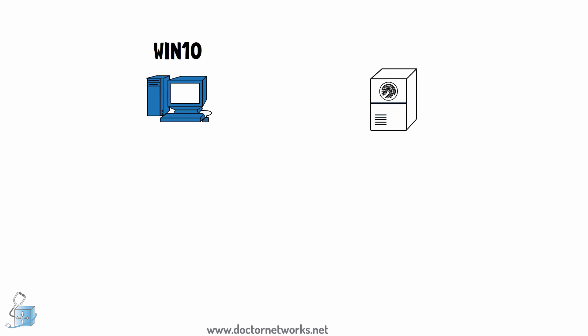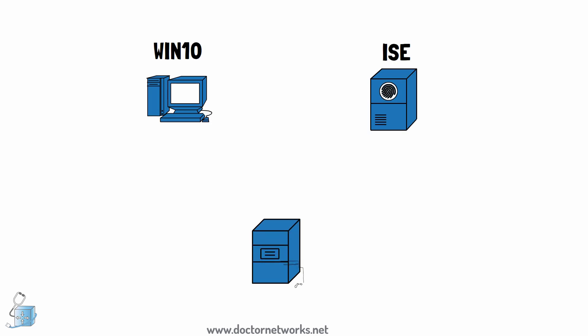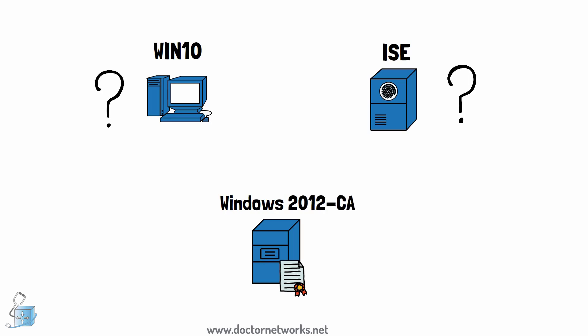Three key players are present in the lab: the Windows 10 machine acting as the client, the Cisco ISE server itself, and Windows Server 2012 acting as the certificate authority. Neither ISE nor the Windows machine currently knows about this CA server, so they don't trust it — although in production networks, domain computers may already trust your organization's CA.